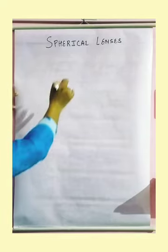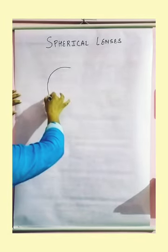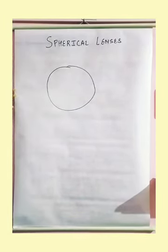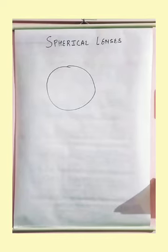What is this spherical lens means? Basically, spherical lens is defined as it is also a spherical glass body.